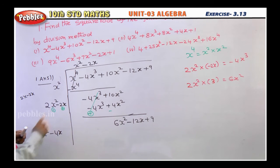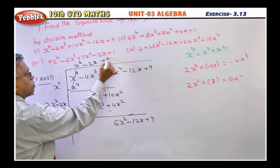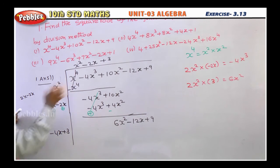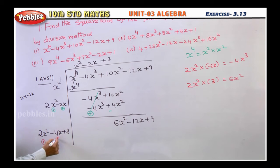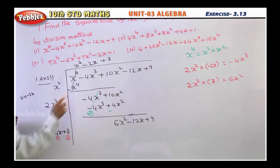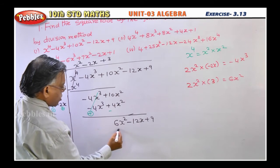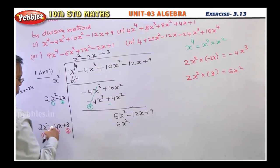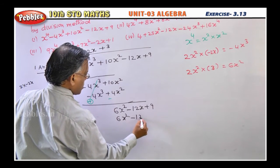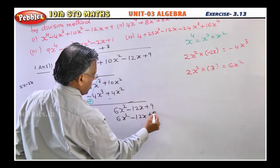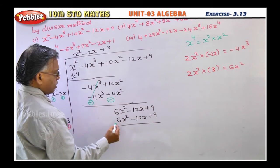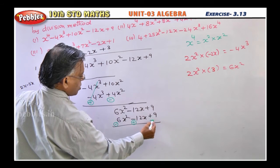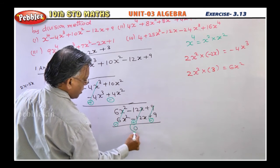Add 3 here and also here. Now multiply 3 by all three terms: 3 into 2x² gives 6x²; 3 into minus 4x gives minus 12x; and 3 into 3 gives 9. We are subtracting this, so signs will change — positive becomes negative. Everything cancels out, and the remainder is 0.